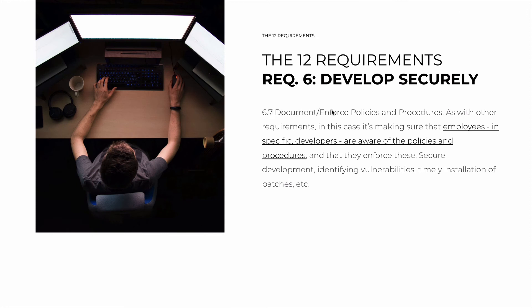6.7 is our old friend: document and enforce these policies and procedures. Make sure that the employees — in this case specifically the developers — are aware of the policies and procedures. They have to develop securely. Other employees need to identify vulnerabilities, install patches, and so on. Whoever is the owner of these tasks must make them happen.